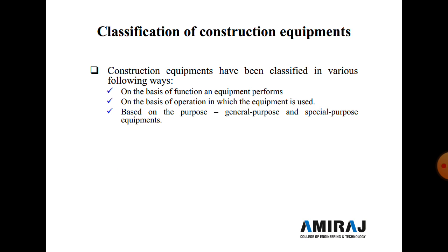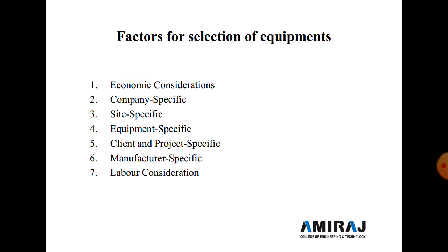The next topic is the classification of construction equipment. Construction equipment can be classified in various ways: first, on the basis of function and equipment performance; second, on the basis of operation in which the equipment is used; and third, based on purpose — either general purpose or special purpose equipment. This is a common examination question — classify and explain construction equipment.